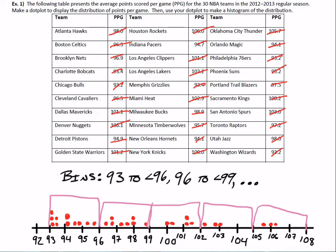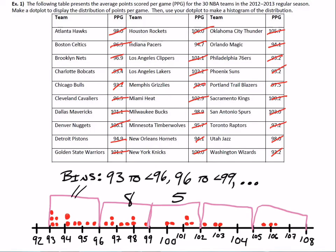When we make the histogram, we want to know how many teams are in each bin. Counting the dots in the first bin, it looks like 11 teams from 93 to 96. Then 8 teams in the 96-to-99 bin. Five teams in the next bin. Then 3 teams, and 3 teams in the last bin. So I chose a width of 3 for each bin.